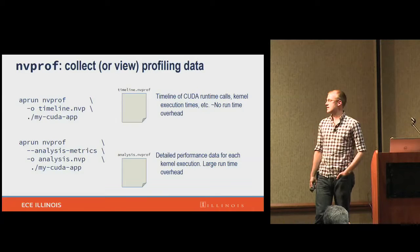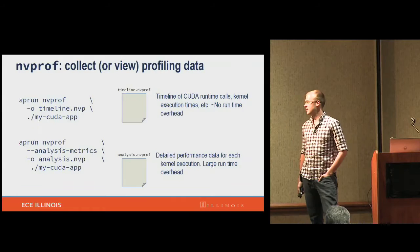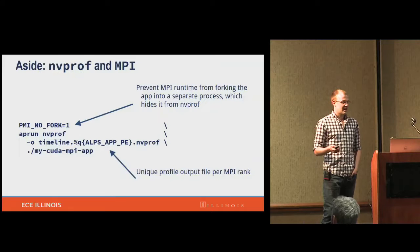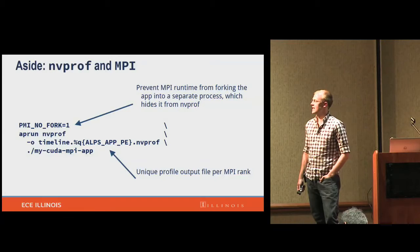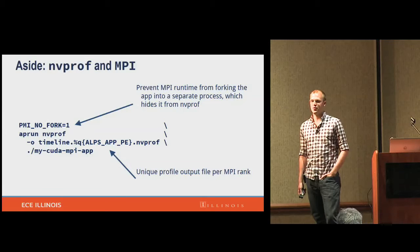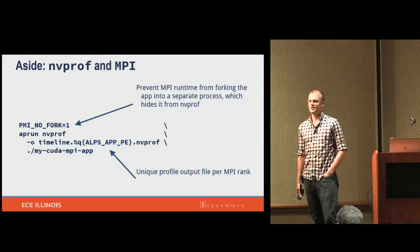The second invocation collects detailed performance metrics of your code. You have to run your code twice, and the second run takes a lot longer than normal execution time. You can generate these two files, and this also works with MPI. One caveat: the MPI runtime will sometimes fork a process, and if you don't suppress that, the NVIDIA profiler won't find any CUDA kernels that were executed. Also, with multiple ranks, give each a different profile output file, otherwise the viewer won't understand what's going on.